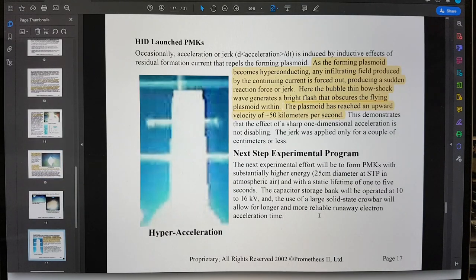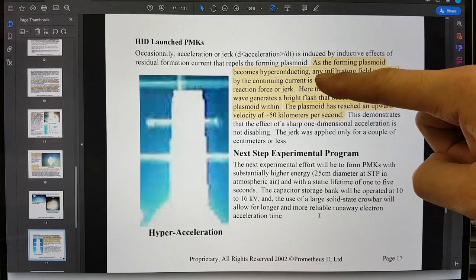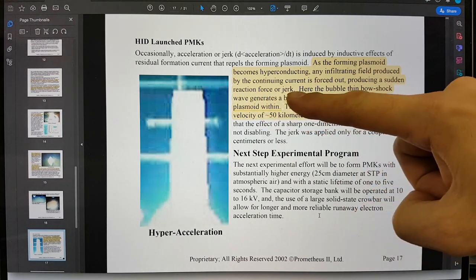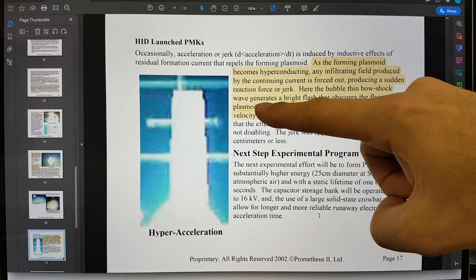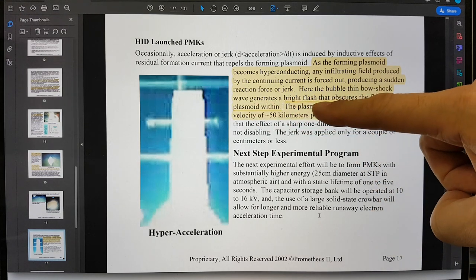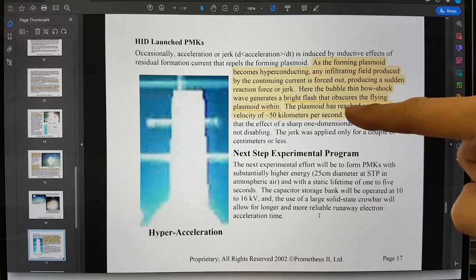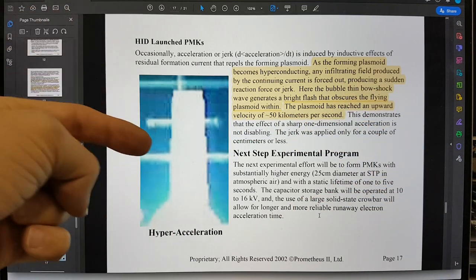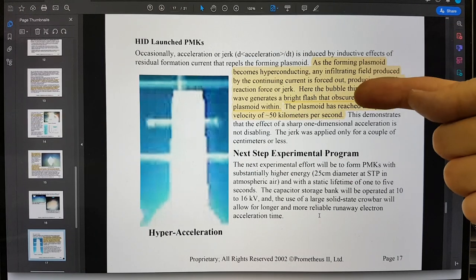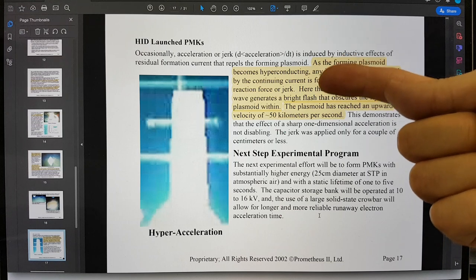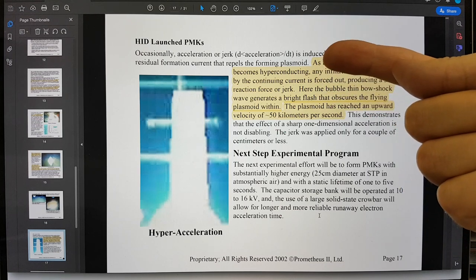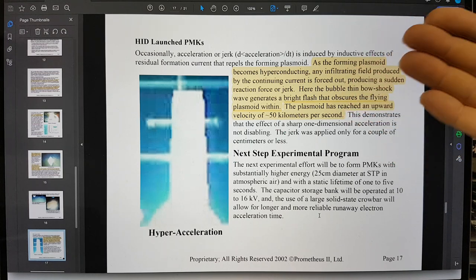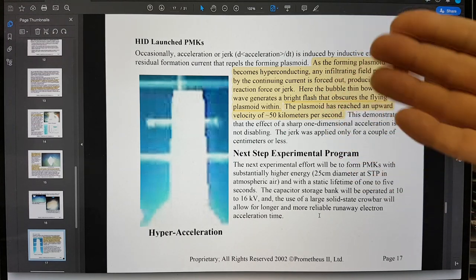Then here we have, as the forming plasmoid becomes hyperconducting, any infiltrating field produced by the continuing current is forced out producing a sudden reaction force or jerk. Here the bubble-thin bow shock wave generates a bright flash that obscures the flying plasmoid within. The plasmoid has reached an upward velocity of 50 kilometers per second. This is very high acceleration. It's the bright flash that I'm talking about here, which I'm interested in, and I will refer to this in the work of Shishkin how that might come about.